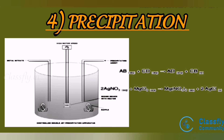General reaction: AB(aq) + CD(aq) → AD(aq) + CB(s). For example: 2AgNO₃(aq) + MgCl₂(aq) → Mg(NO₃)₂(aq) + 2AgCl(s).